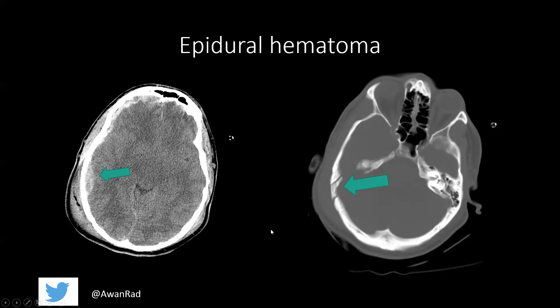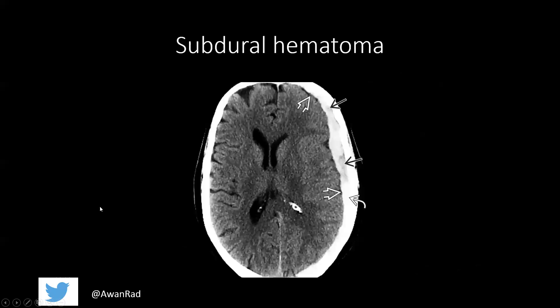Epidural hematomas are usually associated with rupture of the middle meningeal artery. Clinically, the vignette may describe a lucid interval where the patient loses consciousness, is fine for about five or six hours, and then deteriorates. That is very characteristic of an epidural hematoma. What you're looking for is this hyperdense, convex contour hemorrhage along the periphery of the convexity.